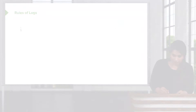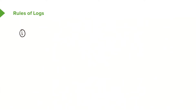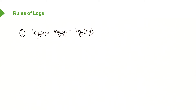Rule number one is known as the addition rule. It states that if you have log base a of x plus log base a of y, you can combine this into one log term, which is log base a of x times y. So if you have the same base number, you can add two logs by just multiplying the numbers inside: log base a of x plus log base a of y is the same as log base a of xy.